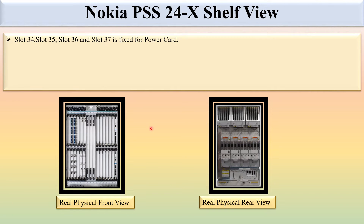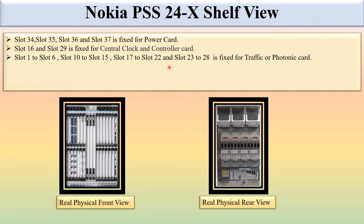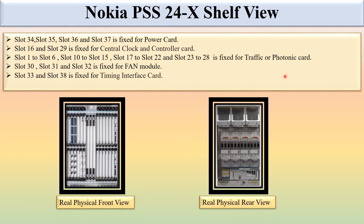Let's see which slot is fixed for which purpose. Slots 34, 35, 36, and 37 are fixed for the power card. Slots 16 and 29 are fixed for the central clock and controller card. Slots 1 to 6, 10 to 15, 17 to 22, and 23 to 28 are fixed for the traffic or photonic card.